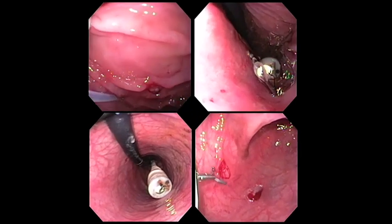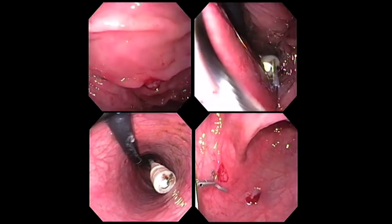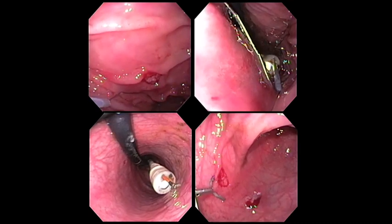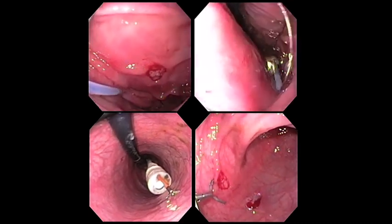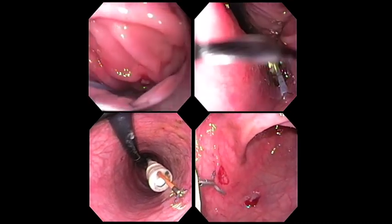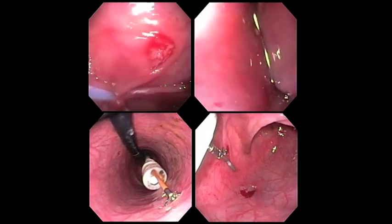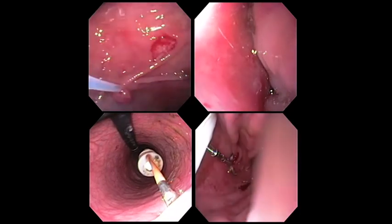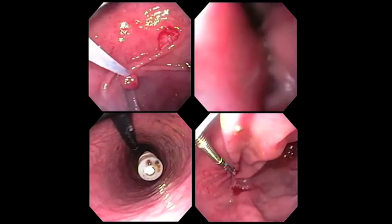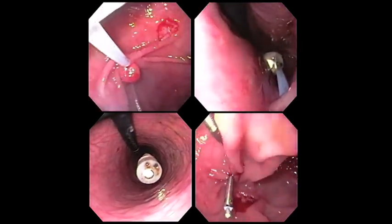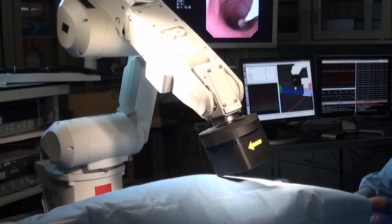Other therapies can be performed with the magnetic flexible endoscope. In the upper panes, we demonstrate cold snare polypectomy. In the lower left, we see use of cold biopsy forceps. And in the lower right, we see successful placement of a hemostatic clip.